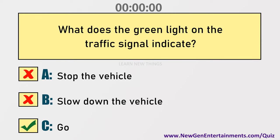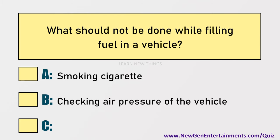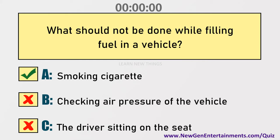What should not be done while filling fuel in a vehicle? Options are: A) Smoking cigarette, B) Checking air pressure of the vehicle, C) The driver sitting on the seat. Answer: Option A, Smoking cigarette.